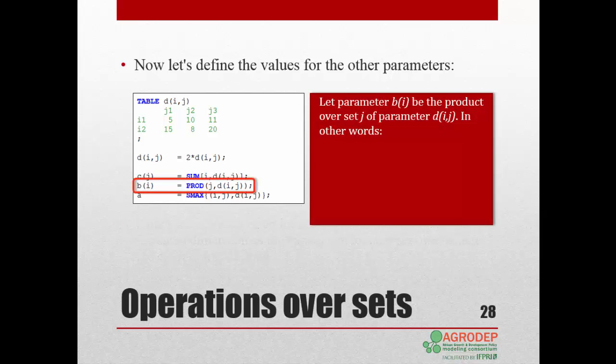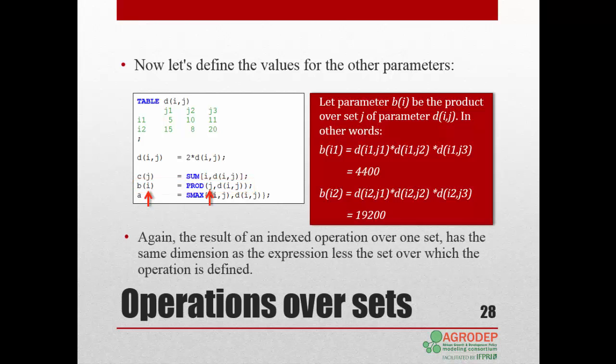The parameter bi is a product over set j of parameter dij. In other words, the product is done over the column of dij. Remember that each element of the table has first been multiplied by 2. We get the following results, 4,400 for the first element of b, and 19,200 for the second element. Note again that the result of an indexed operation over one set has the same dimension as the expression, less the set over which the operation is defined.